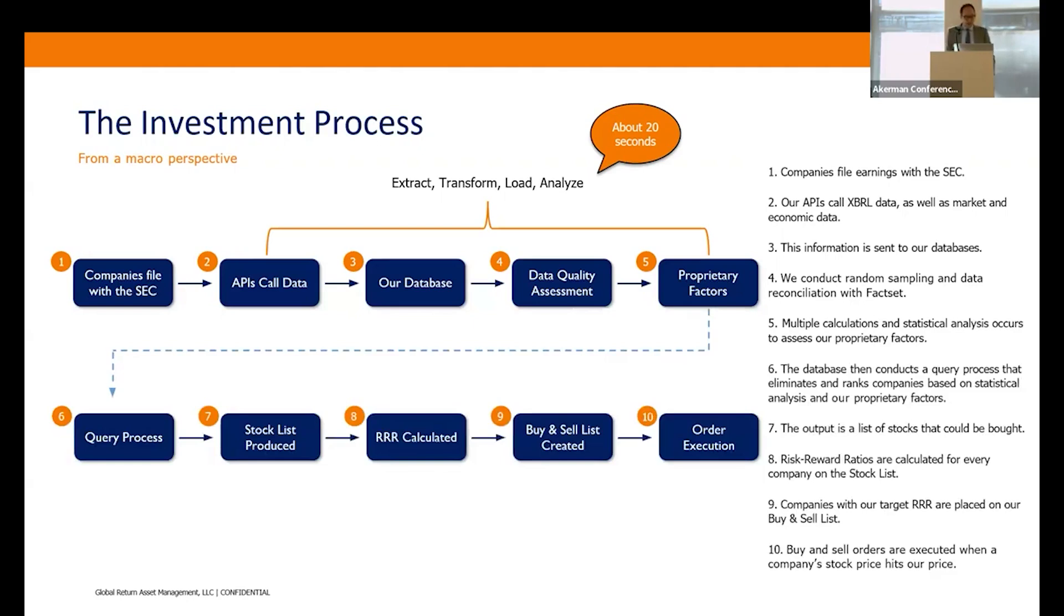The second part of this process is we go through a query process, and then a stock list is produced—these are stocks that we could buy. Then we conduct an RRR, which stands for Risk Reward Calculation, which is how we evaluate investments. I'll talk more about that on the next slide. A buy and sell list is created that we execute the orders on. That takes us 10 seconds. For anybody who's interested, at some point later today or tomorrow or on a Zoom meeting later, I can show you how in about 30 seconds we're evaluating the Russell 3000 and coming up with the buy and sell list.